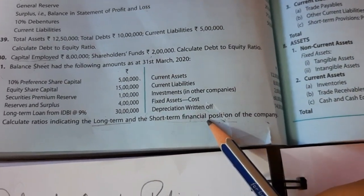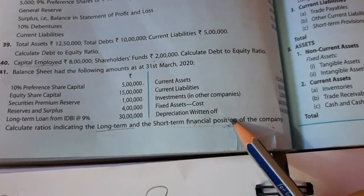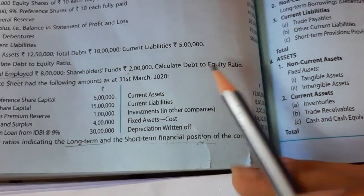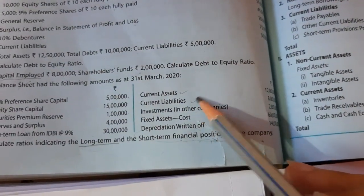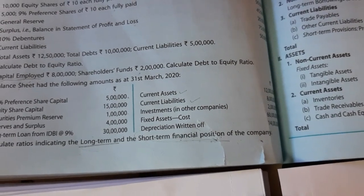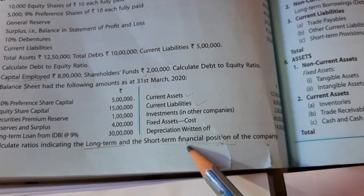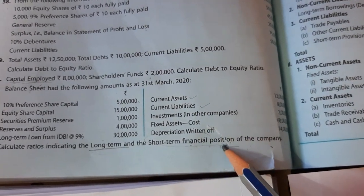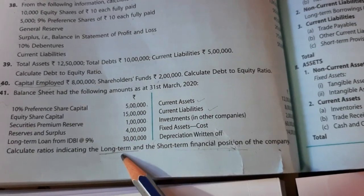For short-term, find the current ratio. Current assets and current liabilities are given, so current assets divided by current liabilities gives the current ratio. For debt-to-equity, we need debts and equity.